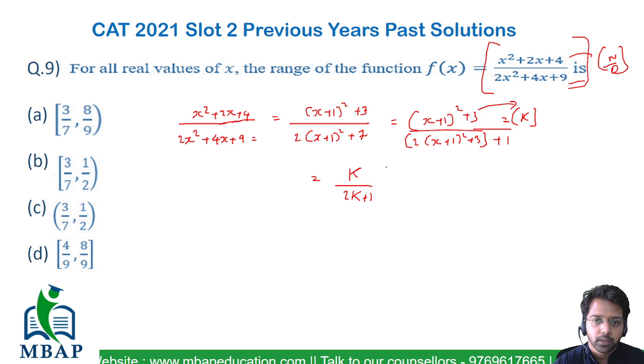What is the value of k? k is nothing but (x+1)² + 3. What is the minimum value that k can get? The minimum value of k will come when x equals 0, and that value will be 3. This gives us 3/7. So the minimum value of this range will be 3/7.